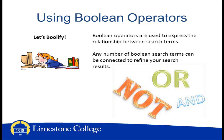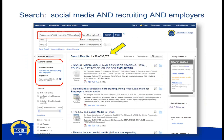Once you have identified your keywords and alternate terms, you will want to make use of Boolean operators. Boolean operators are the words AND, OR, and NOT. These operators are used to express the relationship between terms. Any number of Boolean search terms can be connected to refine your research results. You will search for your keywords in the Cape Catalog or Search Everything or in one of the many library databases, and you can link your keywords in a variety of ways to make your search either broader or narrower.